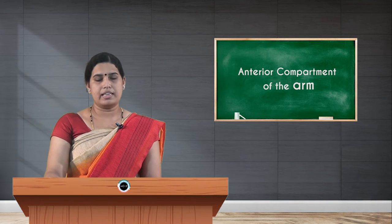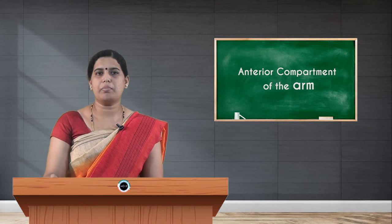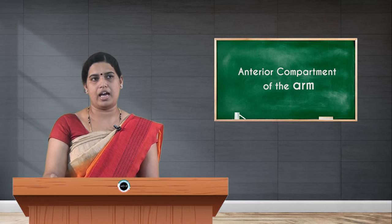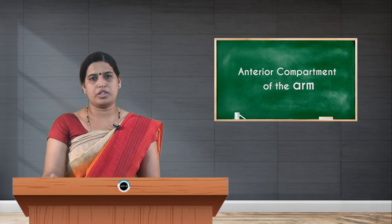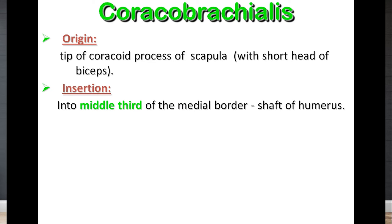Moving on to coracobrachialis — as the name indicates, 'coraco' and 'brachialis'. It takes its origin from the tip of the coracoid process of the scapula. The muscle fibers pass downwards and are inserted into the medial border of the shaft of the humerus. It is homologous with the short head of biceps brachii, which also takes its origin from the tip of the coracoid process.